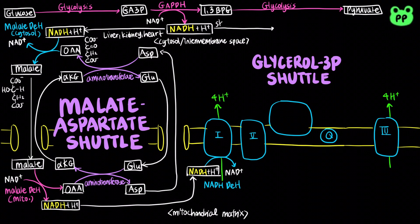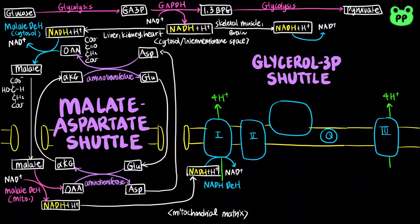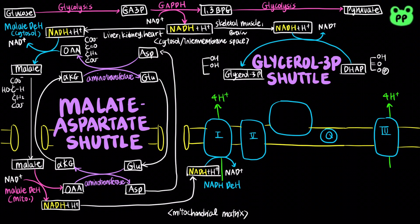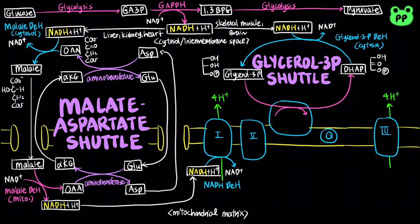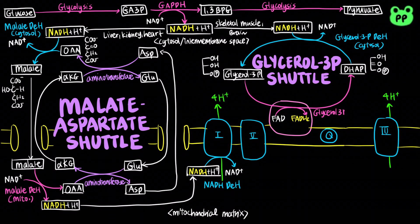Skeletal muscle and brain use a different NADH shuttle known as the glycerol-3-phosphate shuttle. It also involves a reversible reaction. Cytosolic glycerol-3-phosphate dehydrogenase first oxidizes NADH to NAD+ by coupling to the reduction of dihydroxyacetone phosphate to glycerol-3-phosphate. Then an isoenzyme of glycerol-3-phosphate dehydrogenase bound to the outer surface of the inner mitochondrial membrane reoxidizes glycerol-3-phosphate to dihydroxyacetone phosphate, coupling to the reduction of FAD to FADH2, which then transfers electrons to ubiquinone, abbreviated as Q.